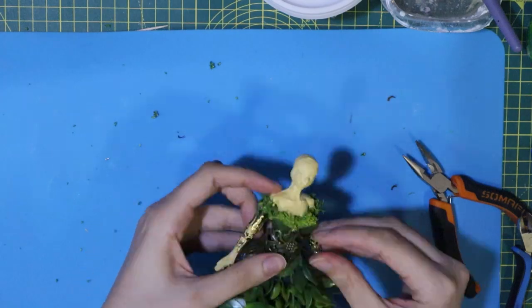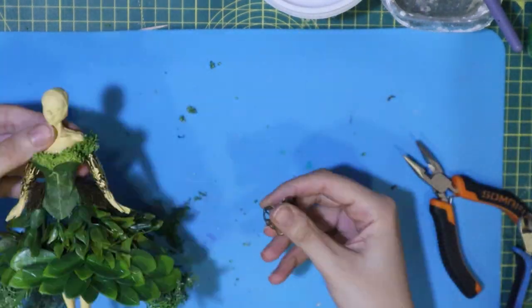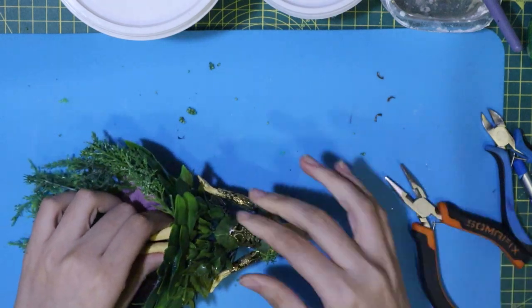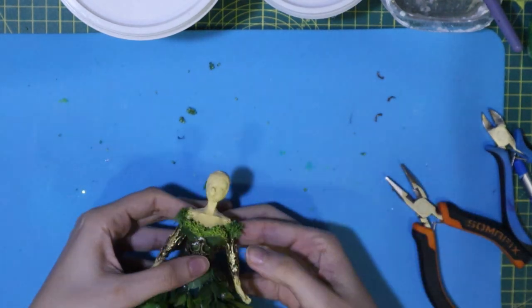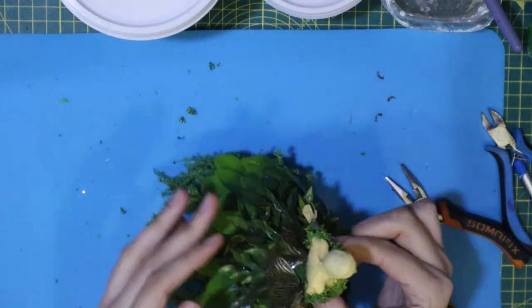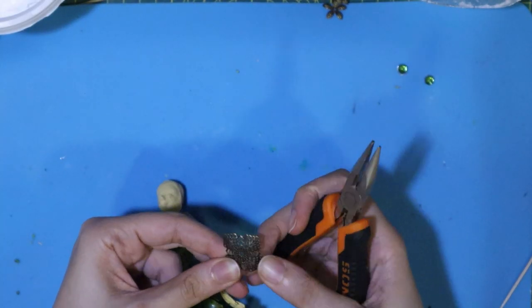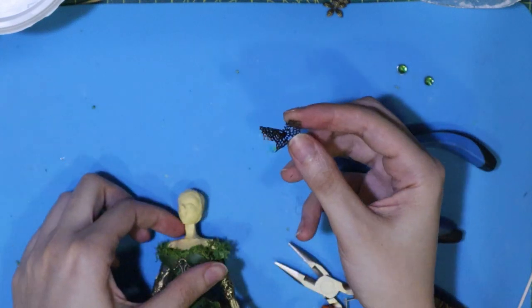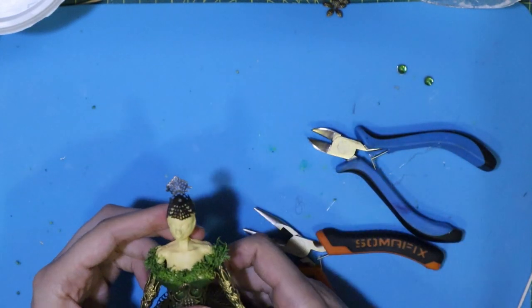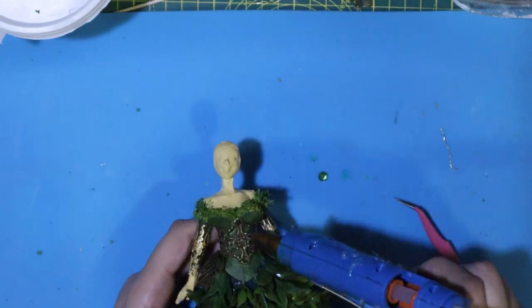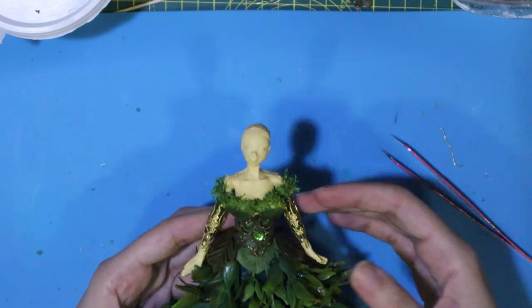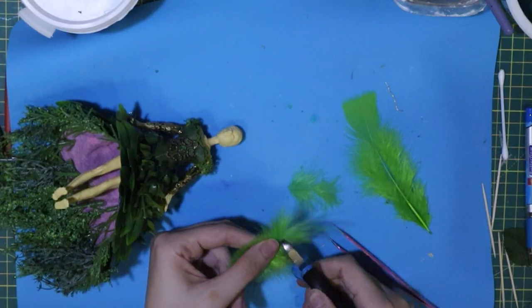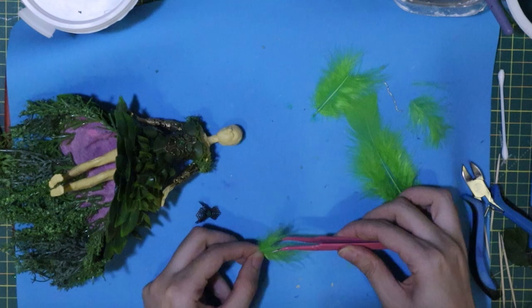I glue on pieces of metallic filigree to add more detail to her gown. I bend a piece of metallic filigree to prepare bases for her headpiece. I glue on a little green bead in the middle of the chest piece and on the headpiece. I hot glue clusters of green feathers on the headpiece.